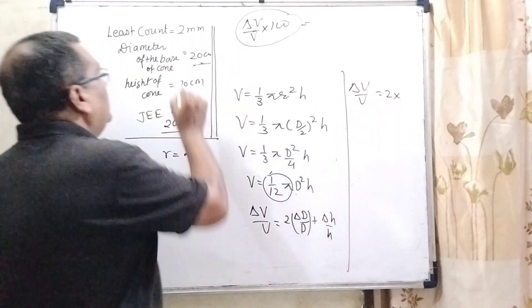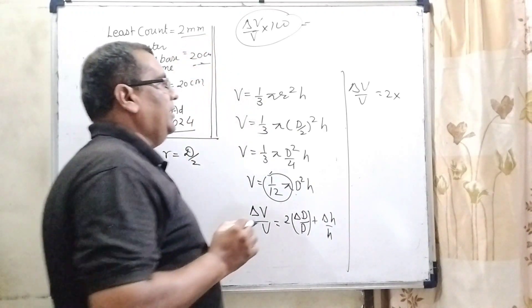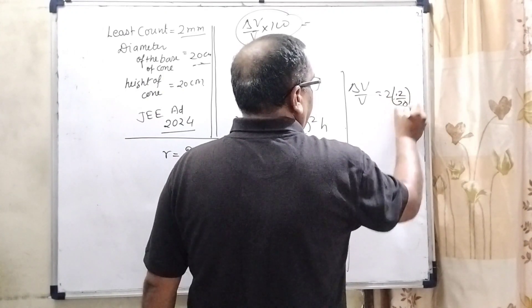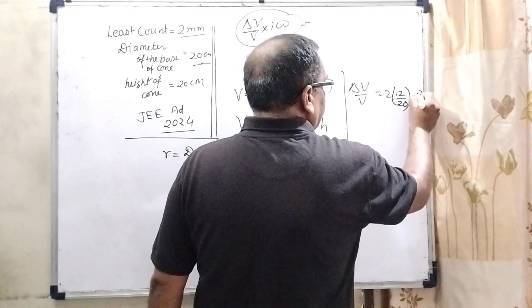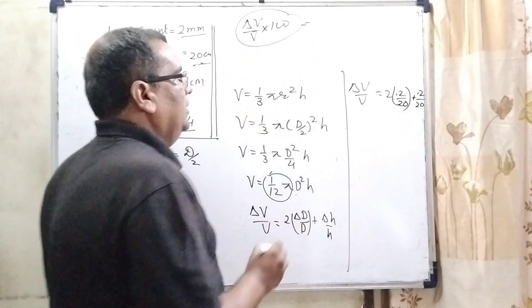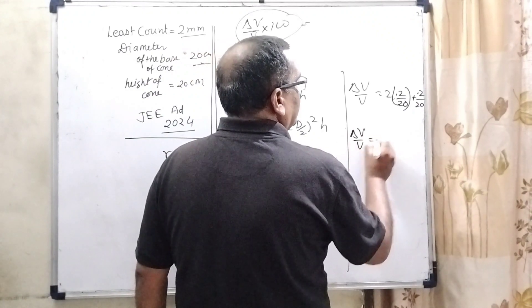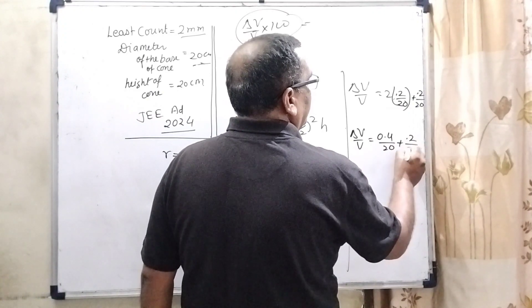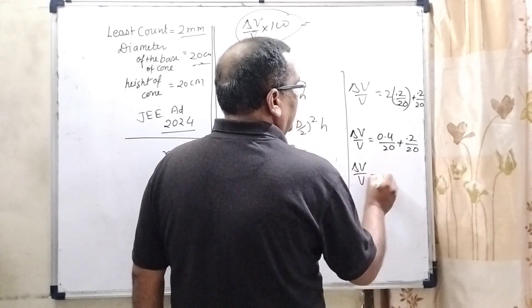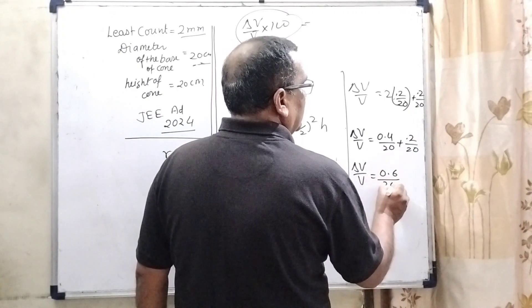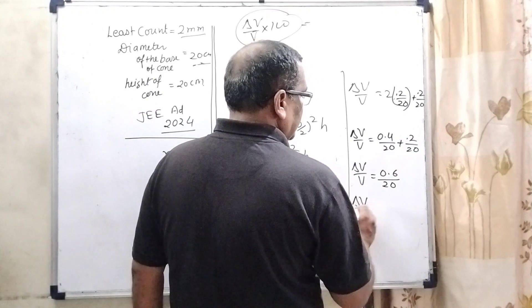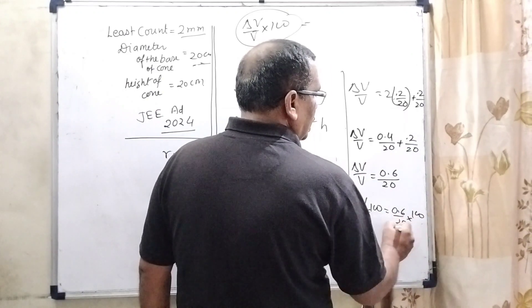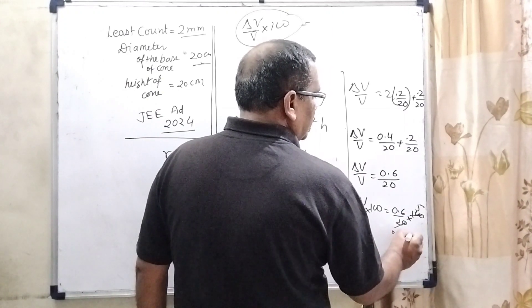What is the least count given? 2 mm. It means divided by 10, converted into centimeter. So it becomes 0.2 by 20 plus 0.2 by 20. So delta V by V equals 0.4 upon 20 plus 0.2 by 20. Then delta V by V is 0.6 by 20, and percentage error, it means multiplied by 100, is 3 percent.